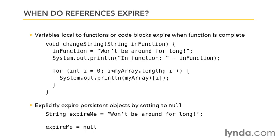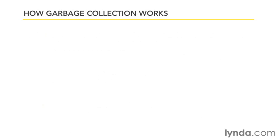I simply set its value to null. The object in memory can't be reached in my code anymore, and therefore it's eligible for garbage collection. So when does garbage collection happen?